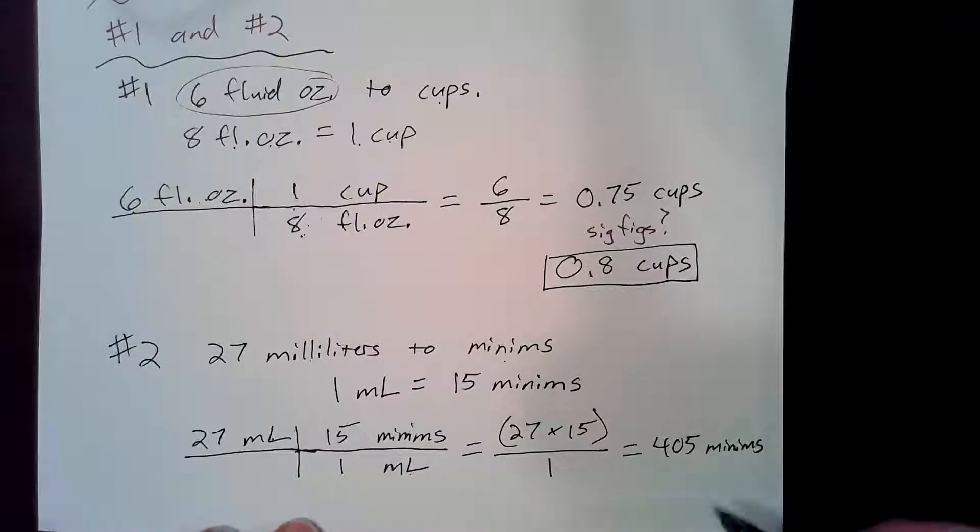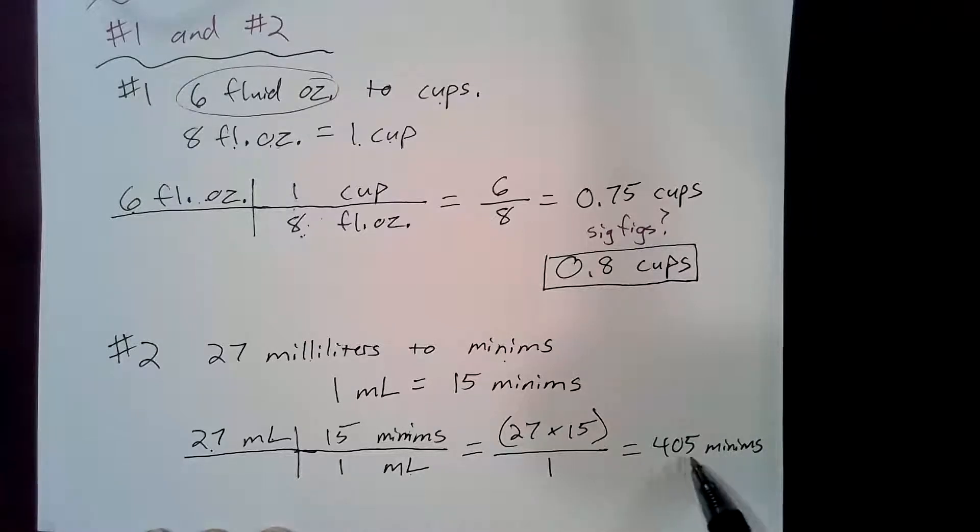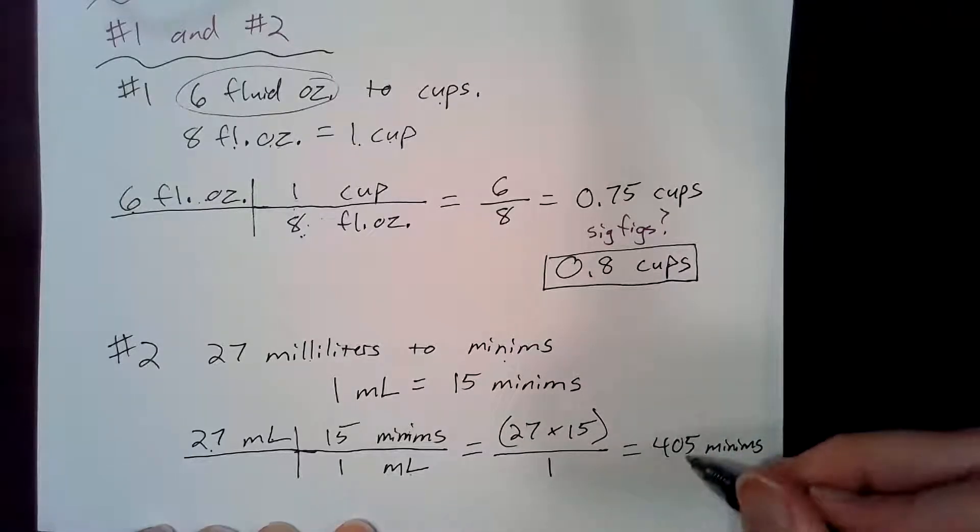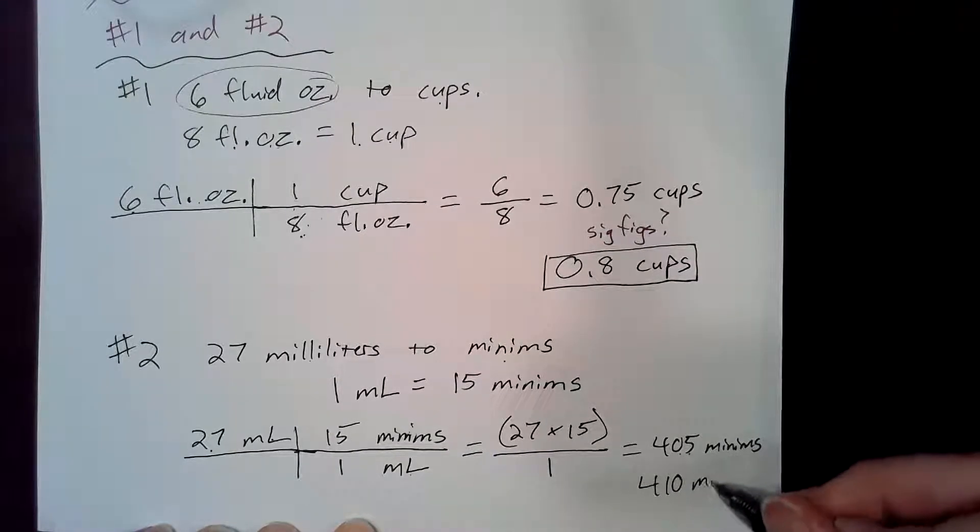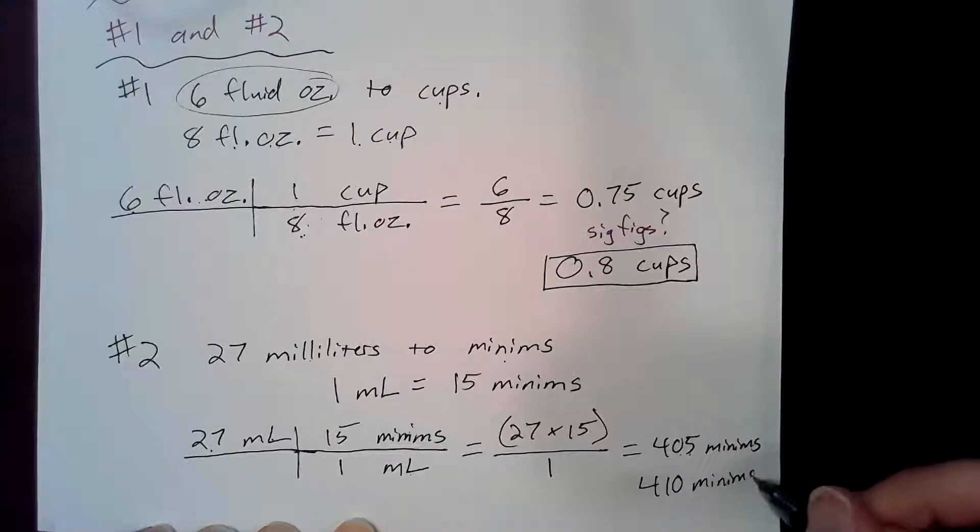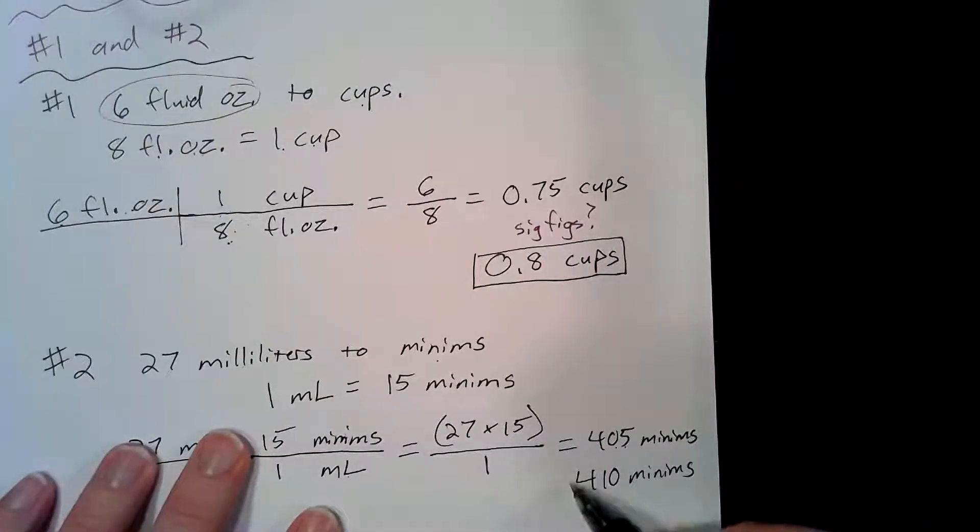But remember your sig figs. I have two sig figs here so my answer should have two sig figs. This one has three. So I need to round up to four hundred and ten minims. And that's my final answer.